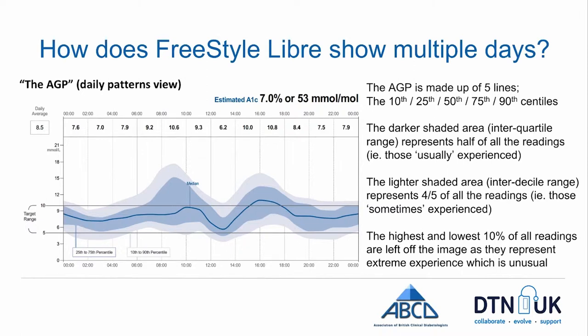In this way we have a much more detailed picture of exactly what this individual has undergone through the course of the sensor wear. The highest and the lowest 10% of an individual's glucose experience are omitted from this picture, which is quite deliberate, because what we're trying to use this for is to look at bigger patterns rather than individual days. The highest and lowest 10% mark the extremes of an individual's experience and therefore things that are relatively unlikely to be repeated.